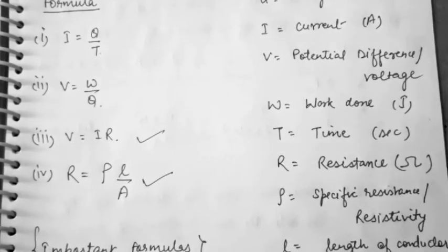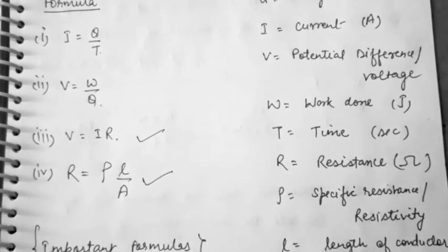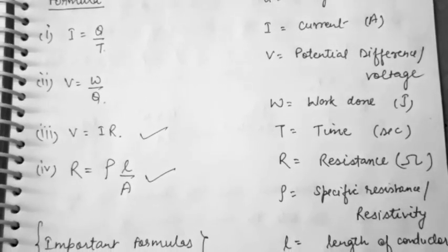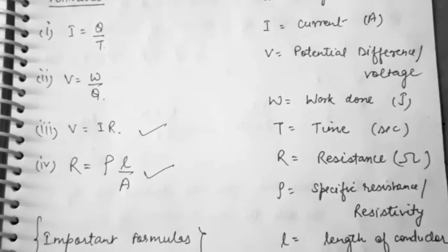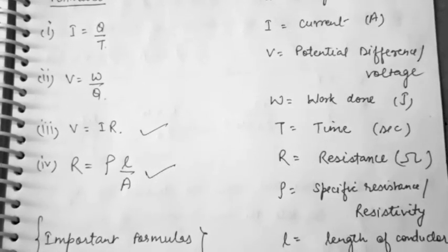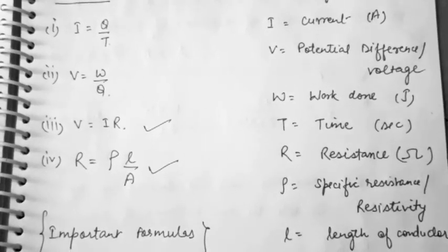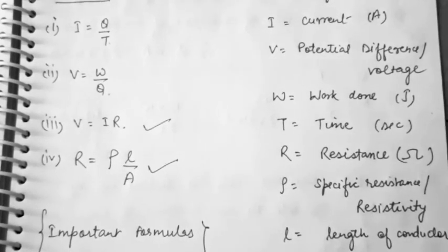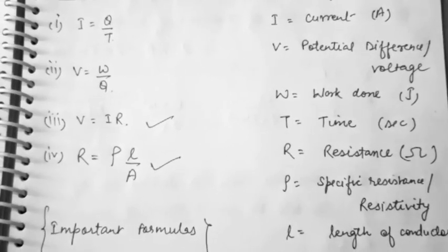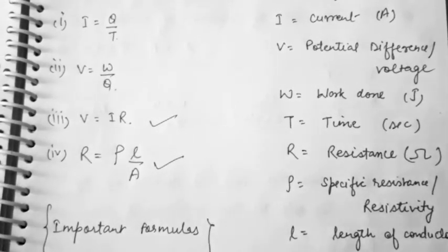Here, ρ (rho) is specific resistance or resistivity — the resistance of a unit cube of a material, which is constant for a certain material. L is the length of the conductor in meters and A is the cross section area in meter square. Now let us go with the numericals.